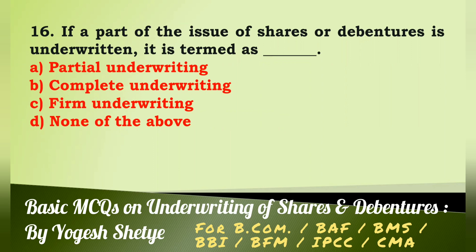Question 16: If a part of the issue of shares or debentures is underwritten, it is termed as — (a) partial underwriting, (b) complete underwriting, (c) firm underwriting, (d) none of the above. Answer: It is termed as partial underwriting. Answer A.